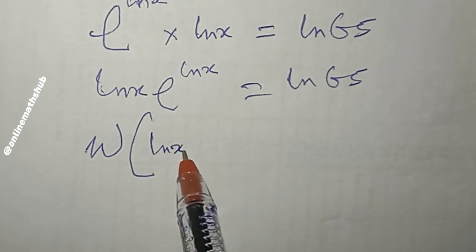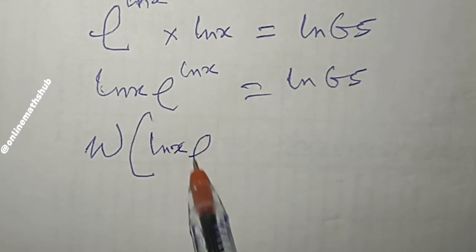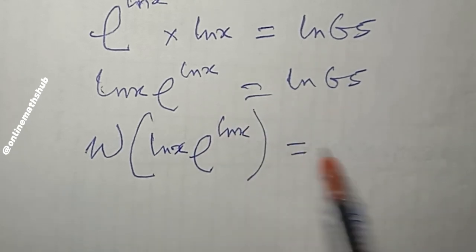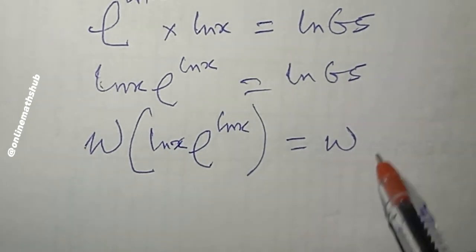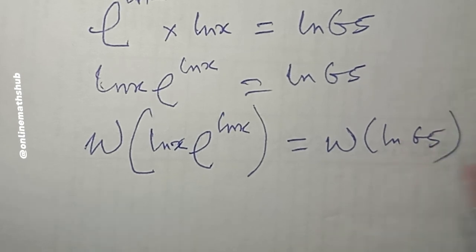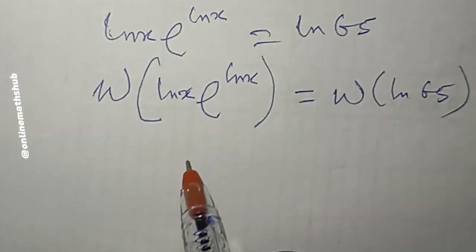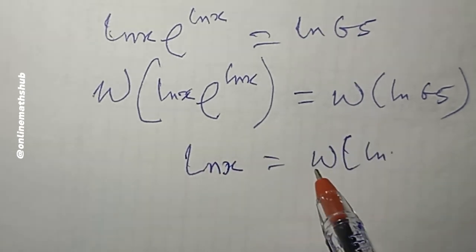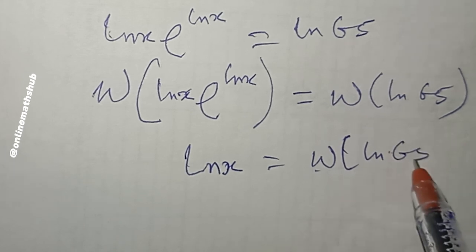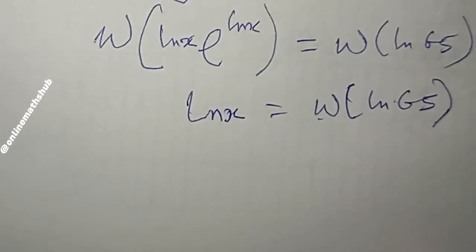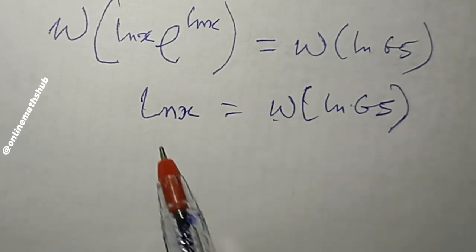Applying the Lambert W function: W(ln(x)·e^(ln x)) = W(ln(65)). The left-hand side collapses, giving us: ln(x) = W(ln(65)).